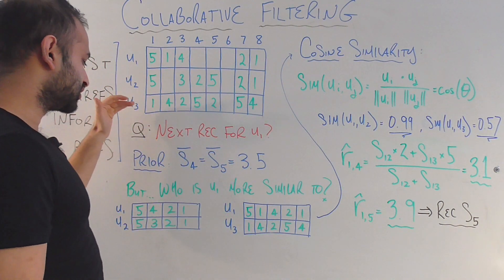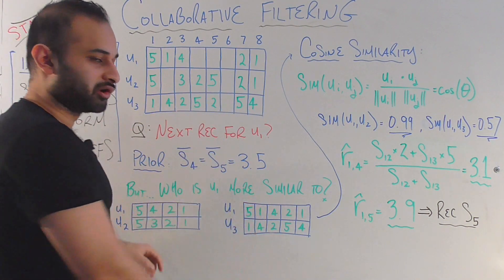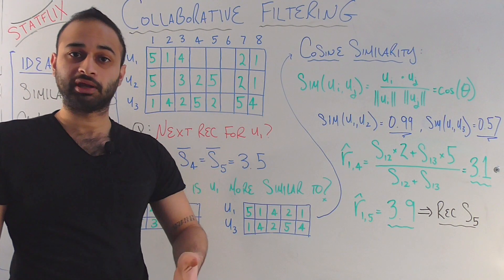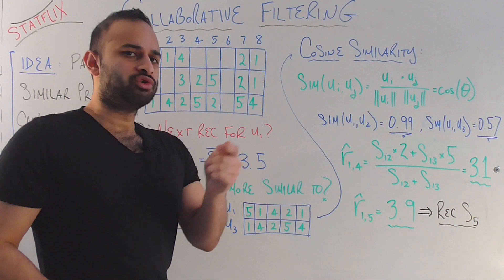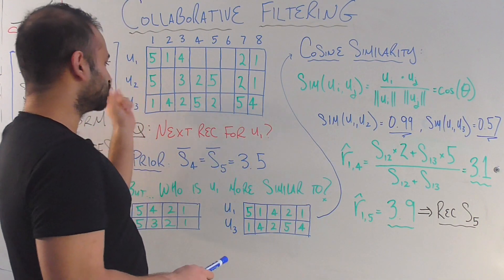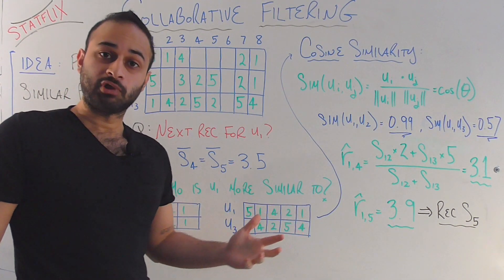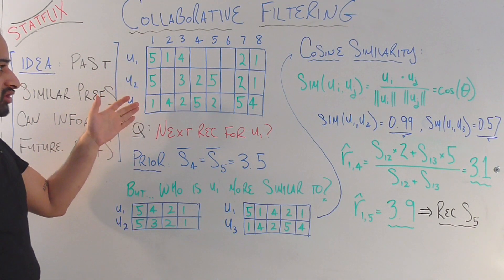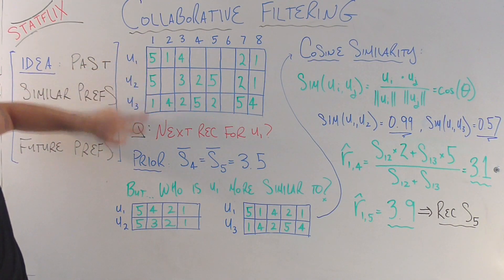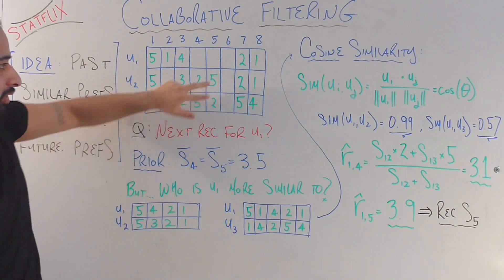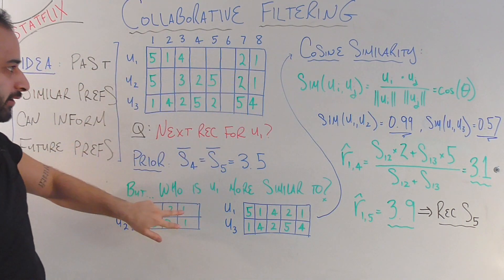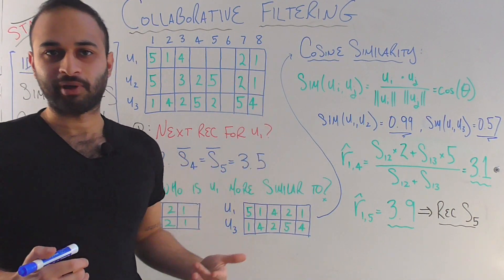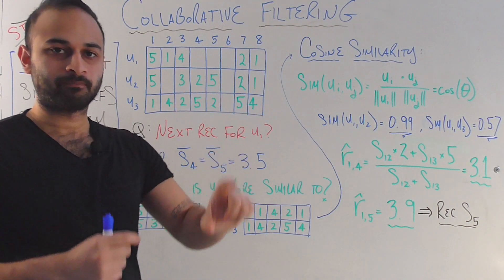Let's be smarter and take similarities into account. I've broken the main table into two smaller tables: U1 versus U2, and U1 versus U3. I want to figure out who U1 is more similar to. The numbers shown are only the common ratings — pairs where both users have reviewed the same content. If one user rated something but the other hasn't, we don't include that pair — only pairs where both have reviewed it.